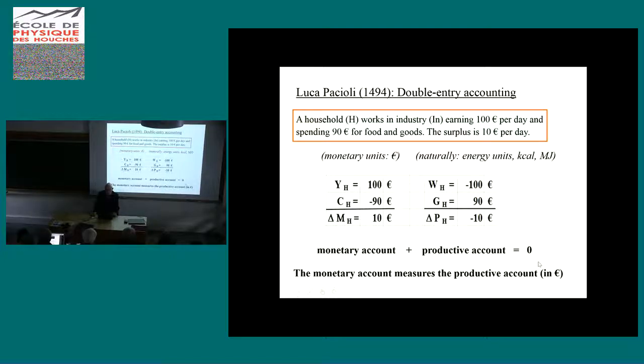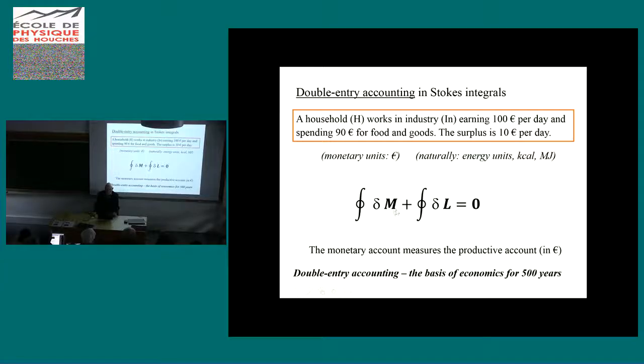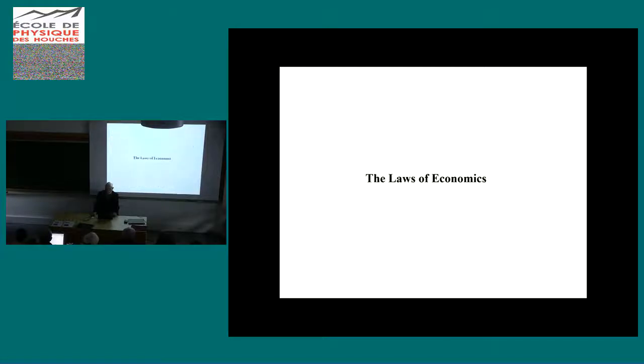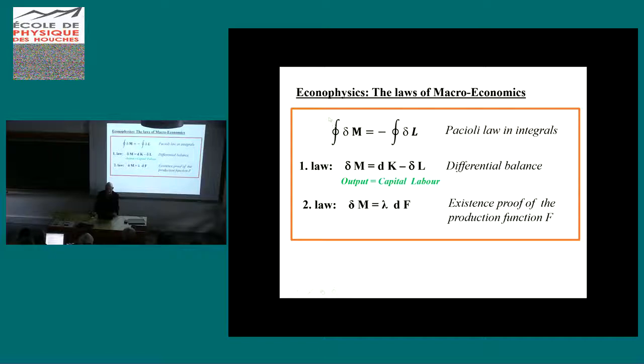The monetary account measures the productive account in euros. The productive account on labor and goods like food are originally measured in energy units - labor in megajoules and food in kilocalories. Pacioli says the monetary account measures the productive account in euros. Since these accounts are Stokes integrals, we can write: the monetary account plus the productive account add to zero. This is Pacioli in Stokes integrals.